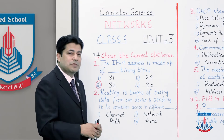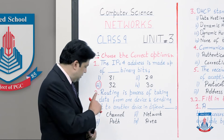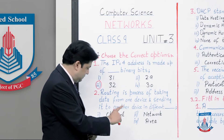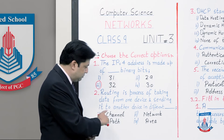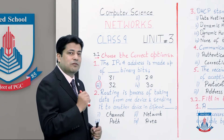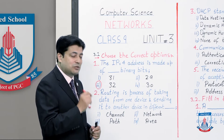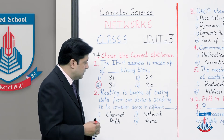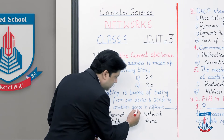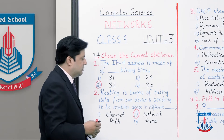Looking at the options: number 1 is channel, number 2 is network, number 3 is path, and number 4 is area. Straightforward — the best answer is option number 2, that is 'network.' Circle it.